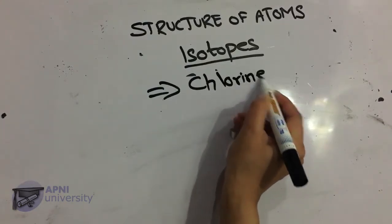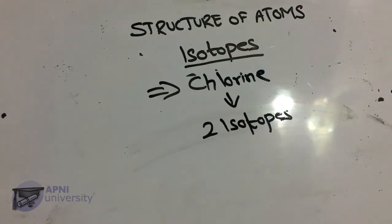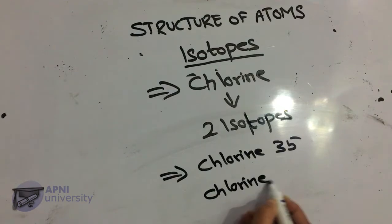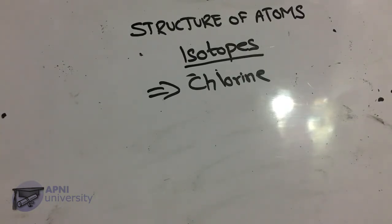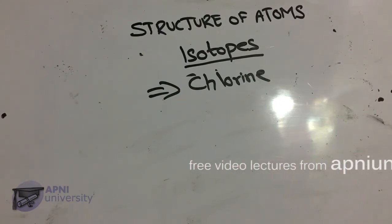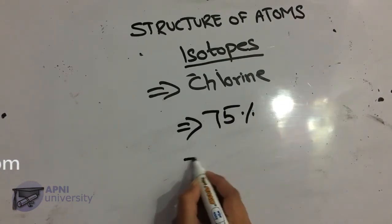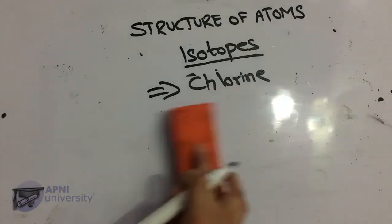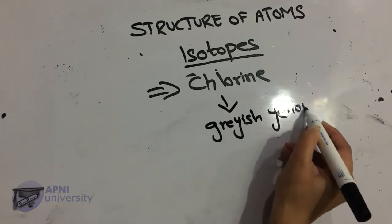Next are isotopes of chlorine. There are two natural isotopes: chlorine-35 and chlorine-37. Chlorine-35 has 17 protons and 18 neutrons; chlorine-37 has 17 protons and 20 neutrons. Chlorine-35 occurs in nature at about 75% and chlorine-37 at about 25%. Chlorine is a grayish-yellow gas with a sharp, pungent, irritating smell and is fairly soluble in water.